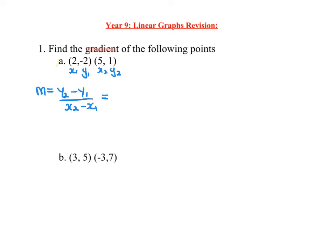So y2 is 1, then the formula says minus, and y1 is negative 2. Make sure you don't forget to put that in. Then x2 is 5, minus, as the formula says, and x1 is 2. When we have a minus and a minus, that becomes a plus. So we end up with 1 plus 2 over 3, which simplifies to 3 over 3, so the gradient is 1.